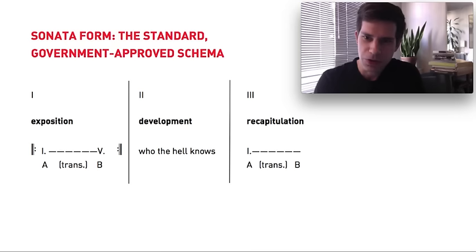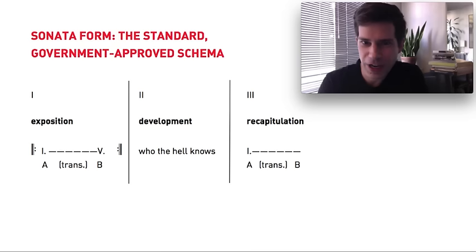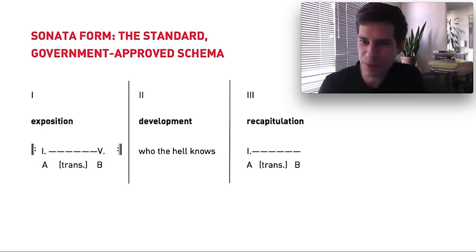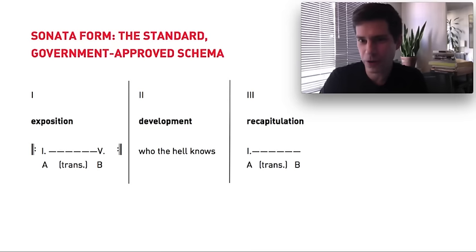You usually have three sections: an exposition, a development, and a recapitulation. Even there I have to stop myself, because there are Mozart sonatas that do not have a development section. In the vast majority of cases you will have an exposition in which basic materials are laid out, as well as a fundamental opposition between two harmonic regions. In the development, anything can happen — you take the materials from the exposition and engage them in a dialogue, cutting them up and rearranging them to see what they can do. In the recapitulation, you restate the materials from the exposition in order, but with one important distinction.